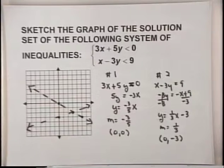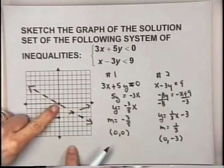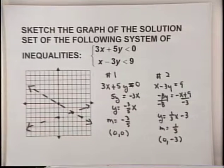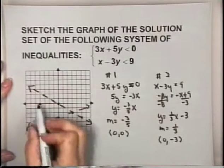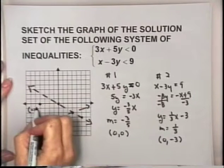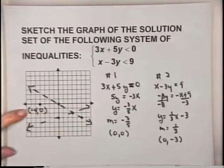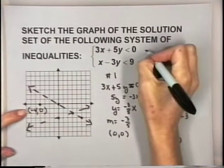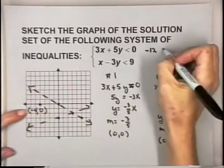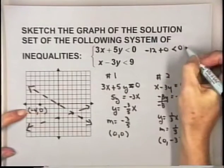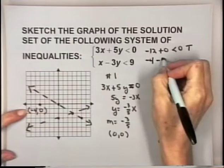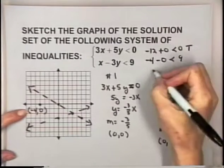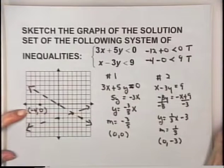Notice that the origin (0, 0) lies on the first boundary line, so we cannot use it as a test point. Let's choose the point (-4, 0). For inequality one: 3 times negative 4 plus 5 times 0 equals negative 12. Is negative 12 less than 0? True. For inequality two: negative 4 minus 3 times 0 equals negative 4. Is negative 4 less than 9? True. Both are satisfied — we found the solution region on the first try and shade that region.